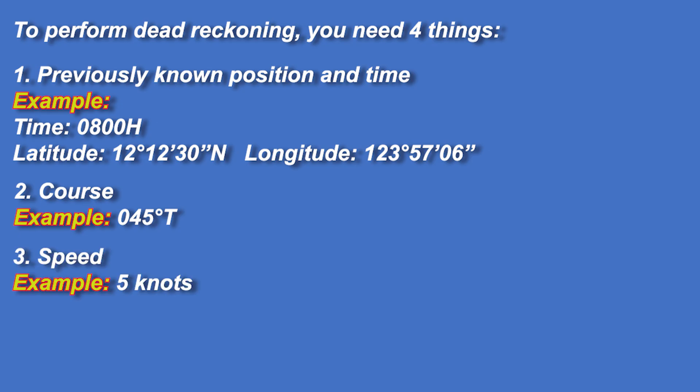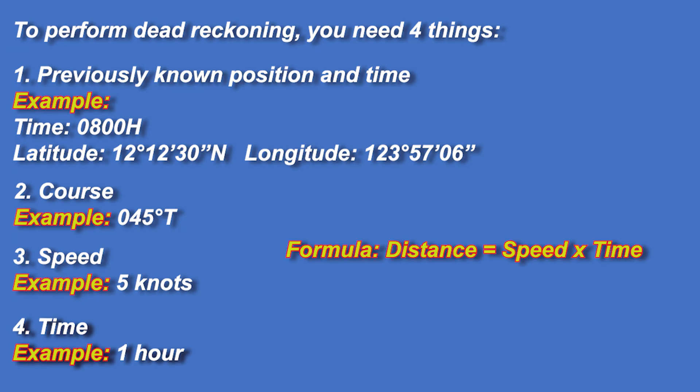Number three: speed. The vessel's speed through the water, typically expressed in knots — nautical miles per hour. Number four: time. The amount of time the vessel has been travelling on that course and speed, usually measured in hours. With these, you use the formula: distance equals speed times time. Then plot your new position on the chart based on the course and distance.